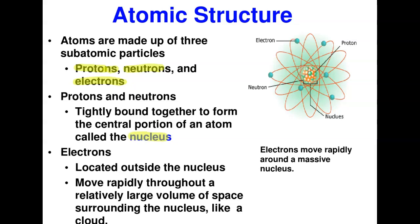The electrons are in constant motion — electrons don't sleep because they keep moving. They are located outside the nucleus and move rapidly throughout the relatively large space surrounding the nucleus, like a cloud. There is no particular or defined orbit where electrons actually circle; they keep moving around and form a kind of cloud. The old Bohr model showed concentric circles, but the modern understanding is that electrons move around as a cloud.